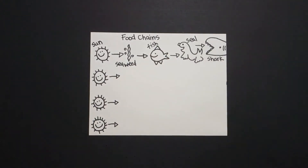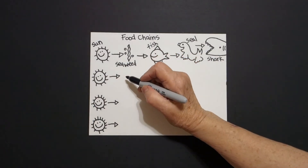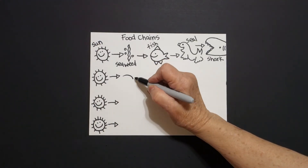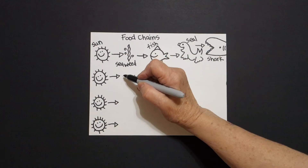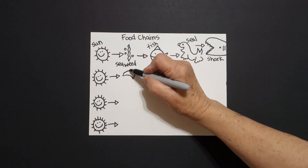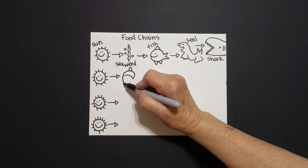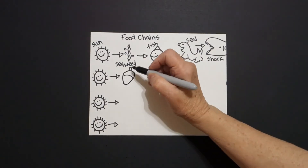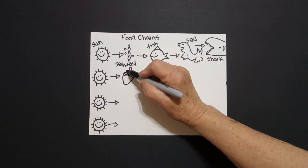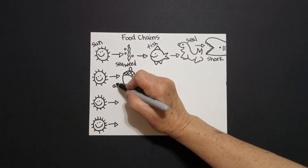The next ones are going to be a little different. Same thing — we start with the sun, then draw curve lines and straight lines with criss-cross diagonal lines. This is an acorn.